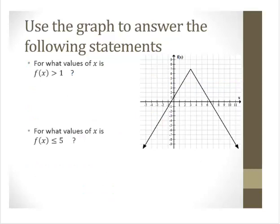Now we have an inequality: for what values of x is f(x) > 1? The first thing we'll do is see where f(x) = 1. That's the output. Where is the output equal to 1? If I draw that horizontal line at 1, notice we have two critical points: at x = 0 and at x = 6.